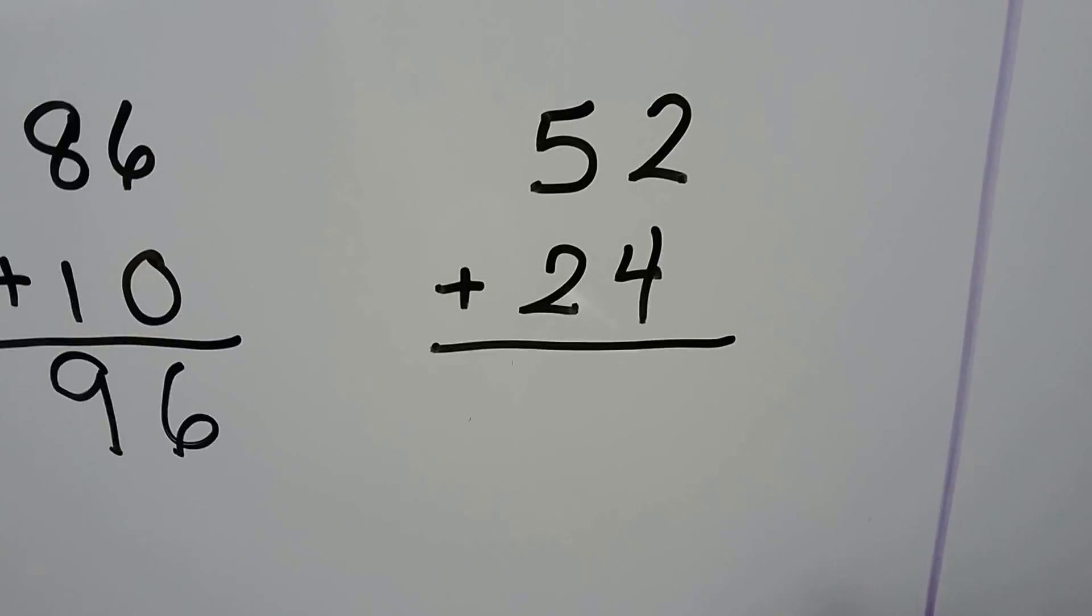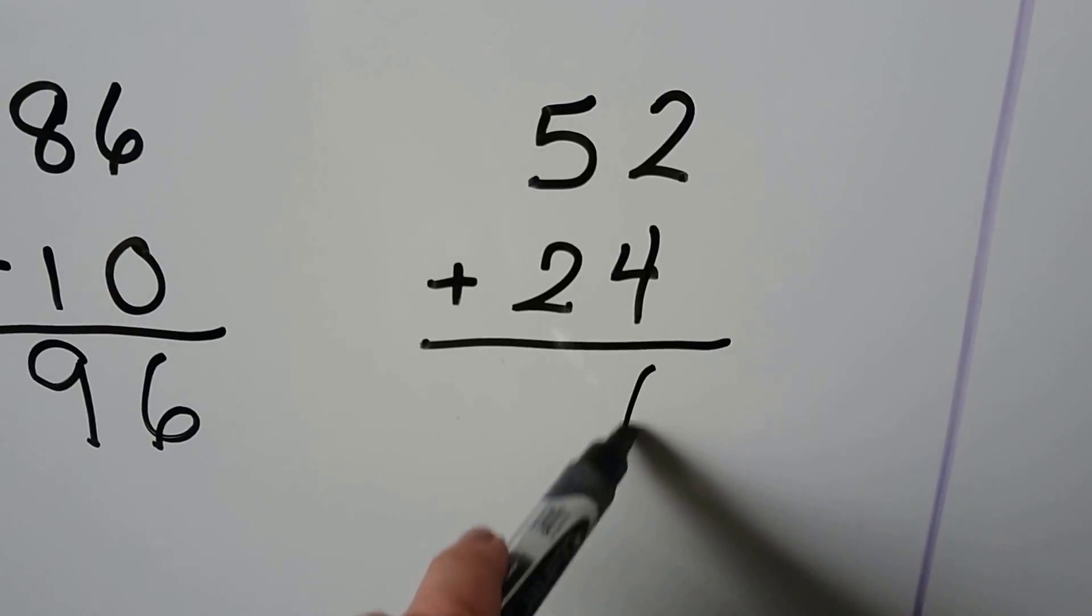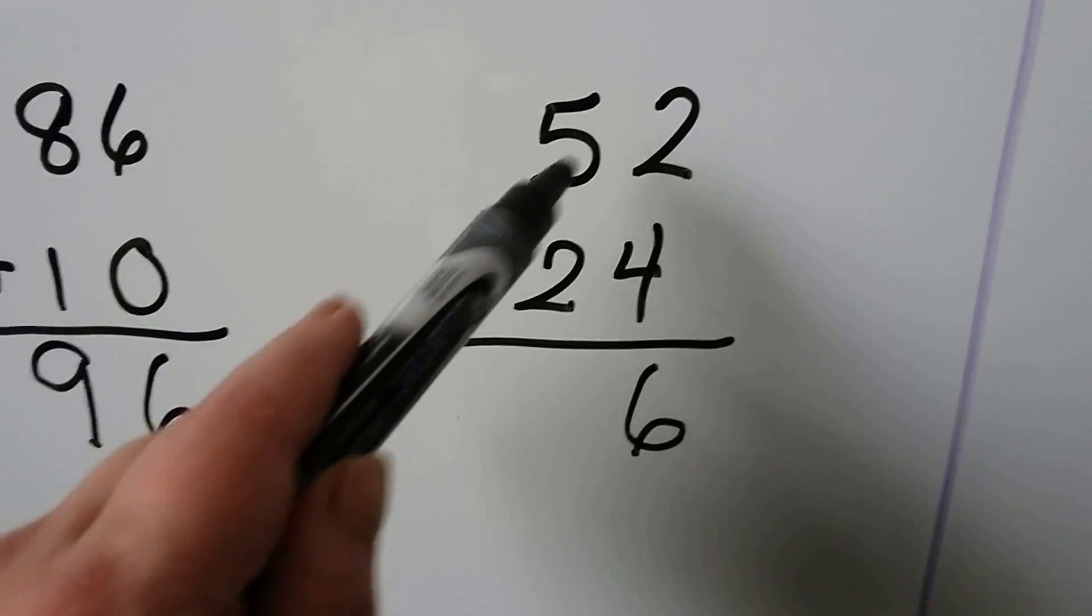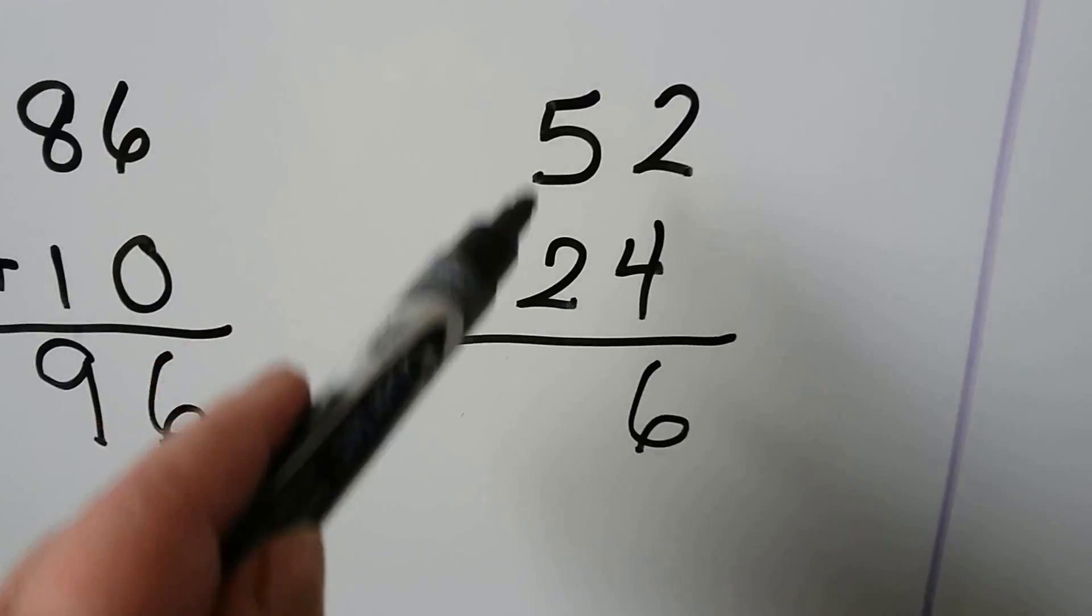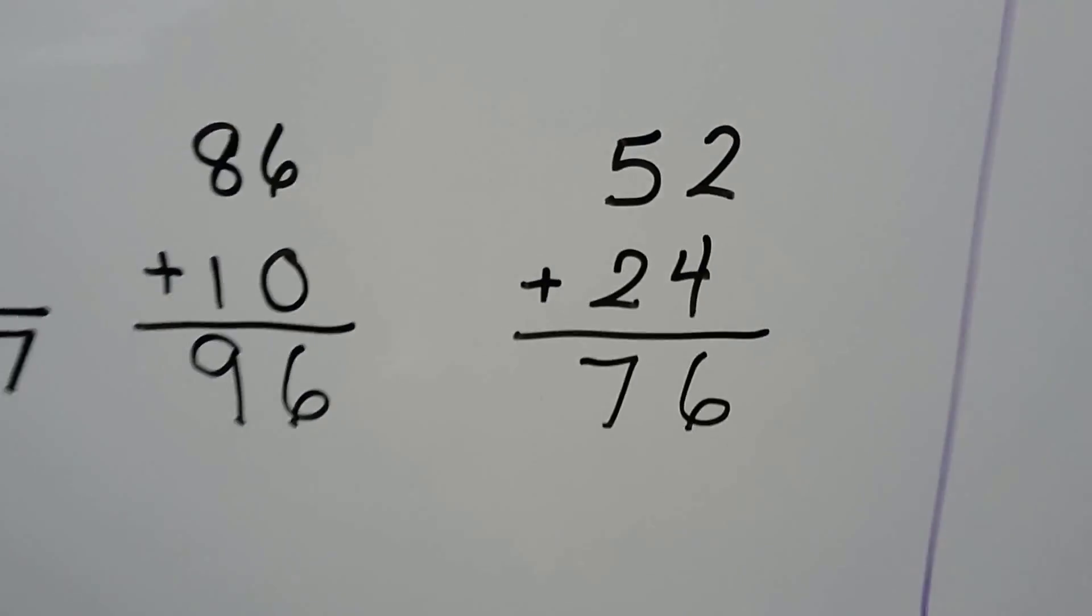52 plus 24. We add the 1s. 4 plus 2 more is 6. 5 plus 2 more is 5, 6, 7. We have 7 10s and 6 1s. We have 76.